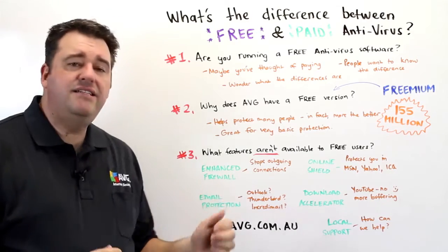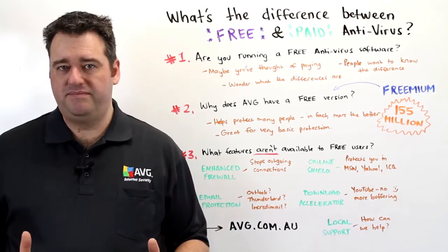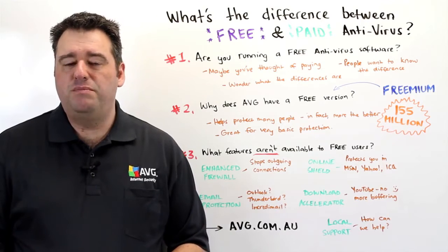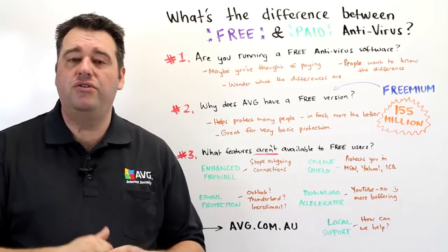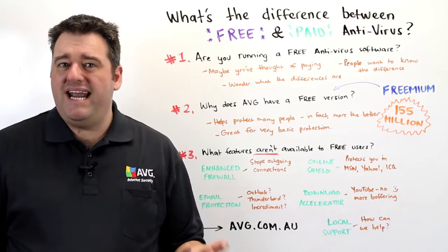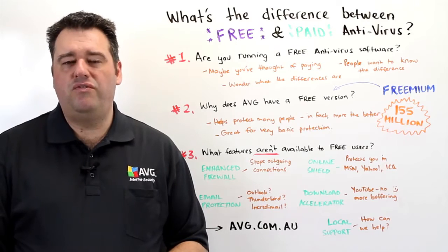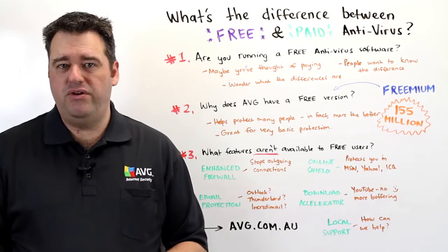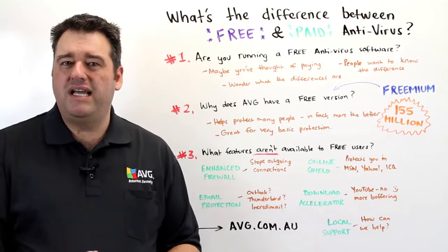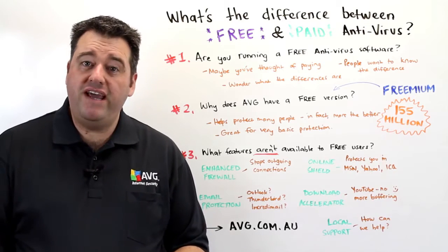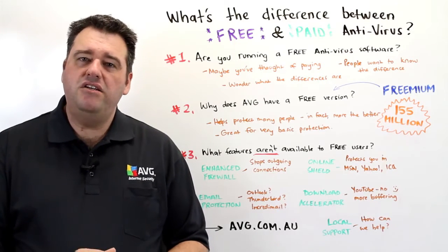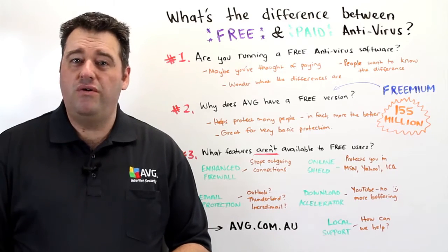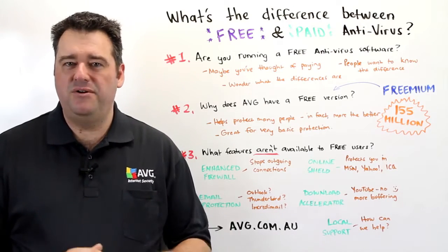First of all, enhanced firewalling. Traditionally, internet firewalls prevent connections from coming into your computer, but importantly, enhanced firewalling stops connections leaving your computer. In the case of something like a remote access Trojan infection, this could be the difference of your attacker viewing you on your own web camera or seeing nothing at all.